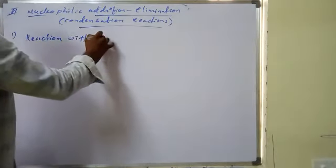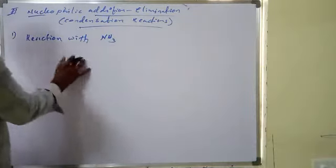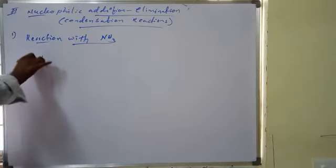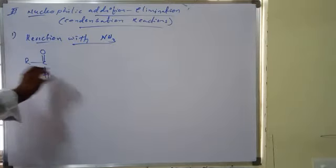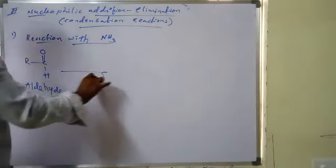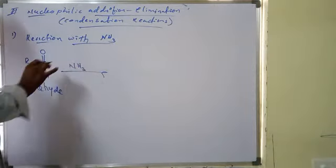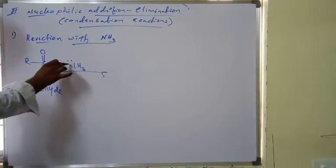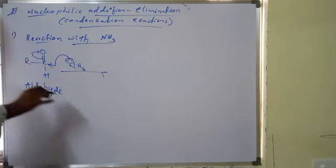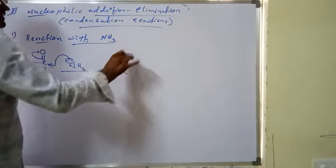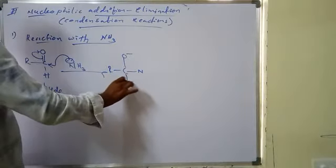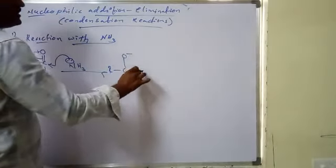First of all, reaction with ammonia. To understand Addition-Elimination, I am taking aldehyde as the example. Ammonia has a lone pair on the nitrogen, so it acts as a nucleophile. It will attack the carbonyl carbon of the aldehyde, giving an O-minus intermediate with NH3 attached.